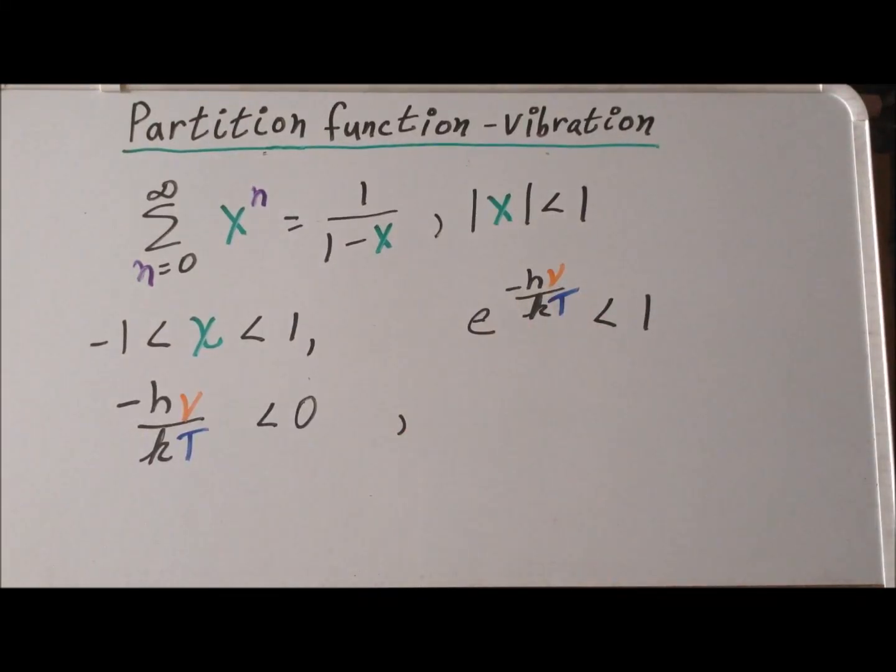We take the natural logarithm of each side, which reduces this expression simply to the exponent, which is minus h nu over kT. And we know that the natural log of 1 is equal to 0. So that gives us that minus h nu over kT is less than 0.